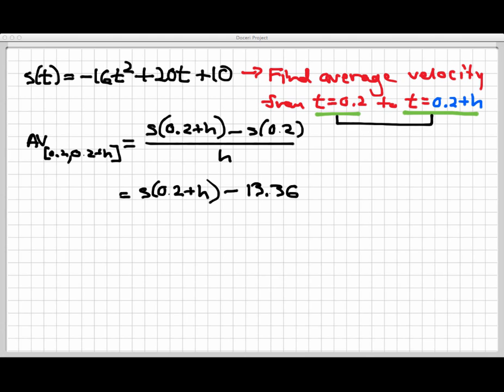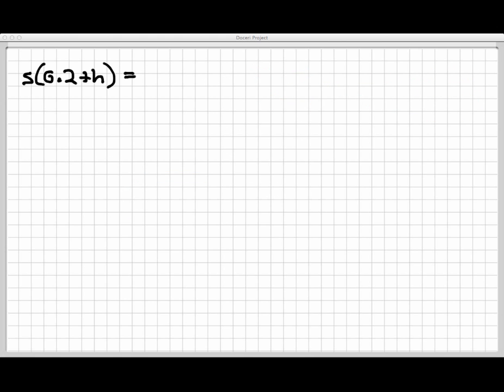I don't really know exactly what s of 0.2 plus h is right now. But I do know from previous experience that s of 0.2 is 13.36. And even if I didn't know that, I could just go back up to my s formula and calculate it. I don't really know anything else here. What I'm going to do now is see if I can use the formula to expand and simplify this fraction that I have here. Let's go over to another slide where I've got this partially set up.